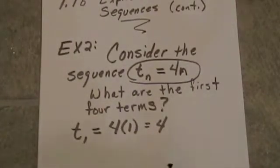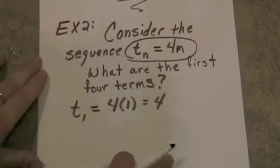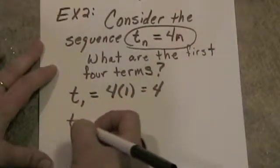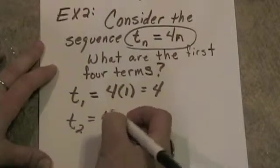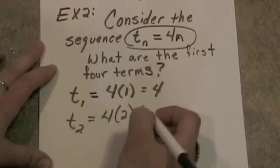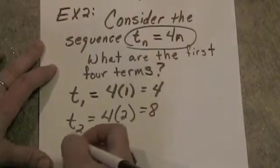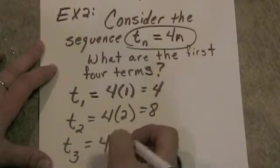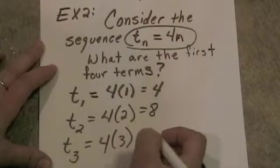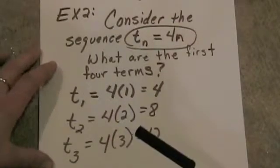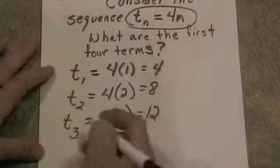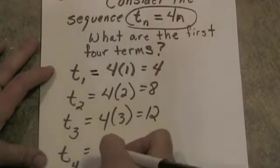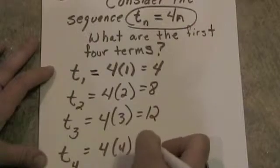t sub 2 would be equal to 4 times 2, which is 8. t sub 3 would be equal to 4 times 3, which is 12. And t sub 4 would be 4 times 4, which is 16.